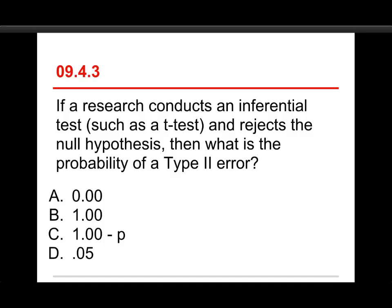All right, if a researcher conducts an inferential test, such as a t-test, and rejects the null hypothesis, then what's the probability of a Type II error? The choices are zero, one, one minus p, or 0.05. The answer here is zero, and it's for the same reasons we had with the Type I error earlier.